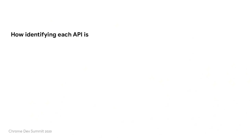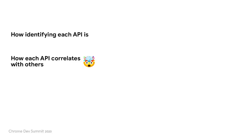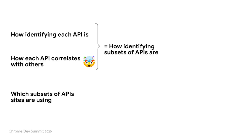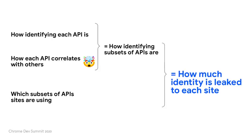So how is the team doing this? First, they measure how much identity each API exposes — for example, they look at how locally installed font files differ across users. Second, they measure how APIs correlate. Remember how we said entropy couldn't be summed? Well, this is another special thing the study does — the team is looking at how APIs actually influence each other in practice. From here, they derive how much identity subsets of APIs expose. And in parallel, they're measuring which subsets of APIs sites are using. And finally, they combine these insights to find out how much identity is linked to each site.